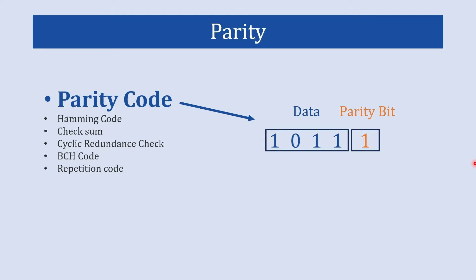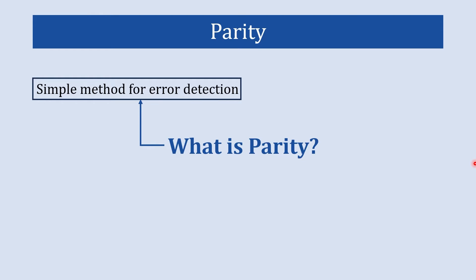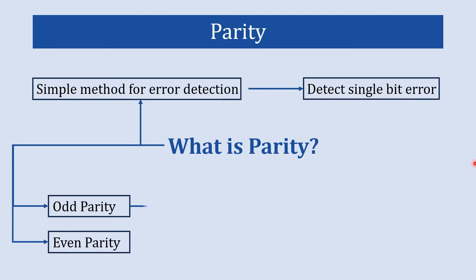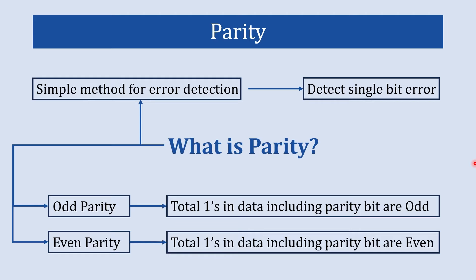Now let's explore what parity code is. Basically it is a concept of detecting error — specifically, it detects single-bit errors. So parity code is a method to detect error and it specifically detects single-bit error. Parity code can be divided into two types: odd parity and even parity. Odd parity means the total number of ones in the data including the parity bit is an odd number, and even parity means the total ones including the parity bit are an even number.